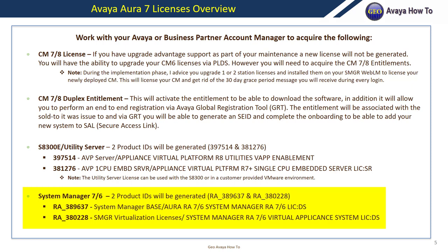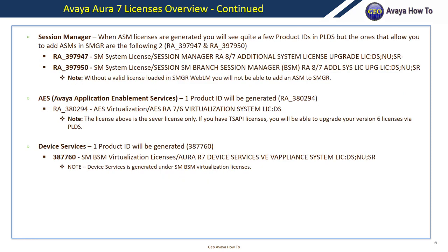For System Manager, two product IDs will be generated: RA389637, the System Manager base license, and RA380228, which allows you to install System Manager on a virtual server. For Session Manager licenses, it's very important to activate the correct licenses because without a valid license you will not be able to add an ASM to System Manager. The product IDs that allow you to add Session Managers are RA397947 and RA397950.